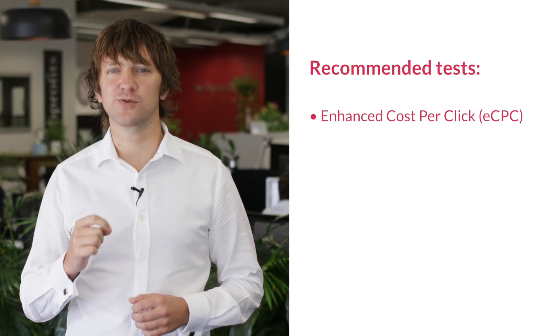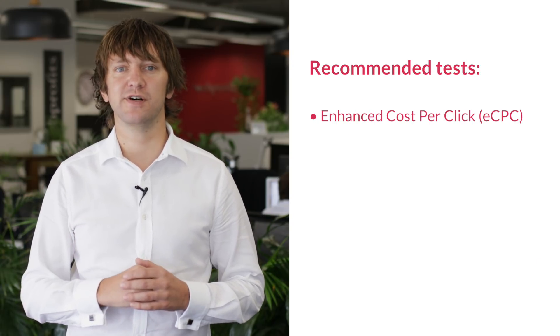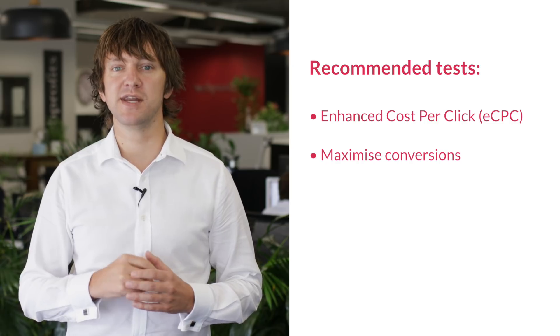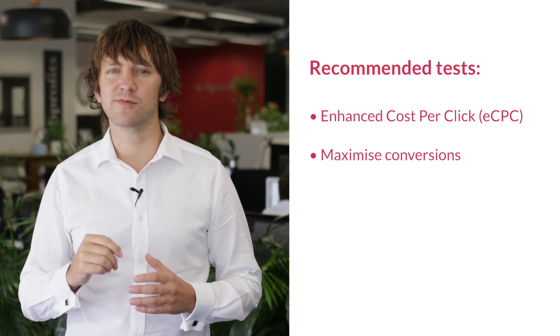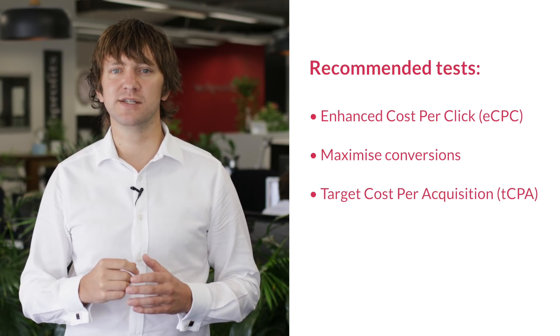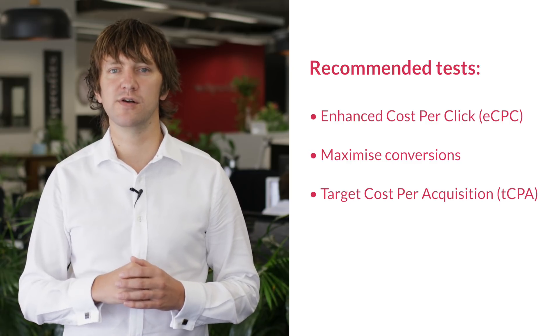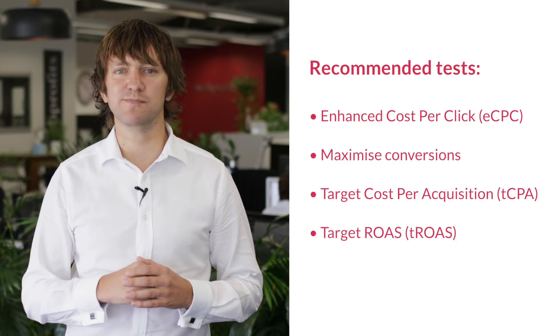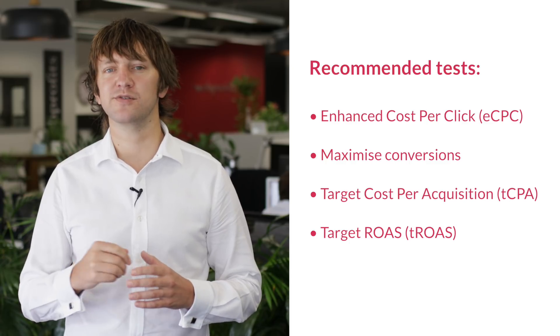If you meet those three requirements and you're ready to move your campaigns over to Google's AI bidding, there are a few different options that you can test. Which one you should try depends on the type of campaign you're running. The most commonly used are: enhanced cost per click, which will automatically adjust your bid up and down depending on if a conversion is likely or unlikely; maximize conversions, which will automatically set your bids to get as many conversions as possible within your campaign's budget but without caring about the cost per conversion; target cost per acquisition, which will automatically set your bids to get as many conversions as possible within your CPA goal but with no target on the volume of conversions; and target return on ad spend, which will automatically set bids to generate as much e-commerce revenue as possible within your target.